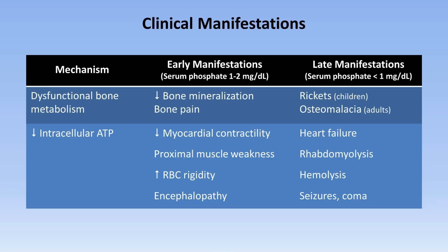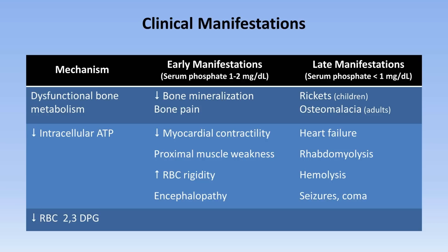Another important phosphate-containing compound in the body is 2,3-DPG, which is produced mainly in red blood cells to aid in oxygen extraction. As one of the main components of this molecule is phosphate, red cell production of it decreases. Low 2,3-DPG levels increase the affinity of hemoglobin for oxygen, which, if severe enough, results in systemic ischemia.